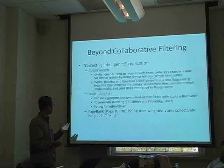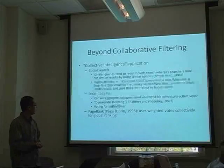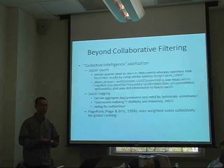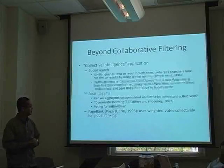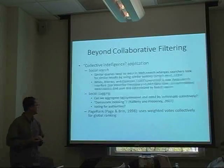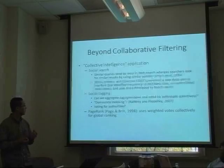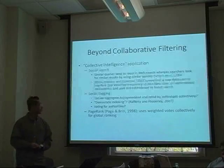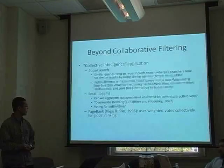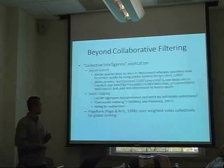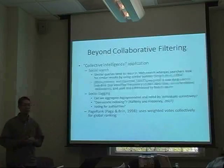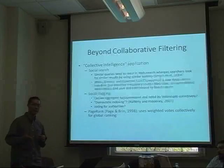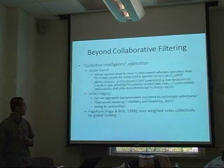Another application is social tagging — the question is whether we can aggregate tags generated and rated by individuals collectively. Rob T. and Hedley call this kind of social tagging 'democratic indexing,' but whether we can identify authorities from this kind of democratic indexing remains an open question. You can also view PageRank as an application of collective intelligence, because it uses weighted votes collectively in order to pre-rank items globally.